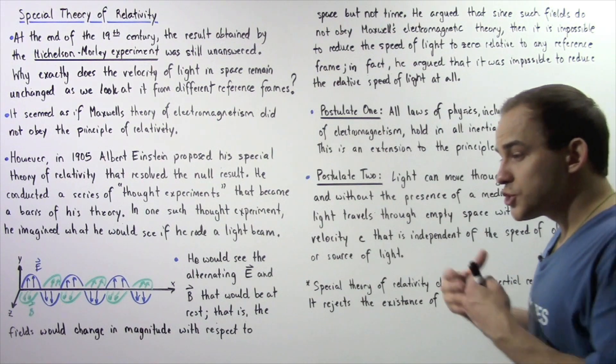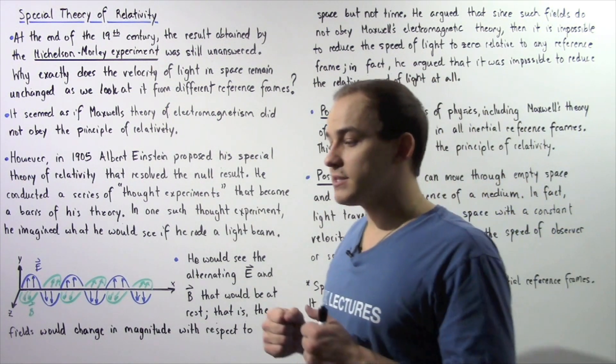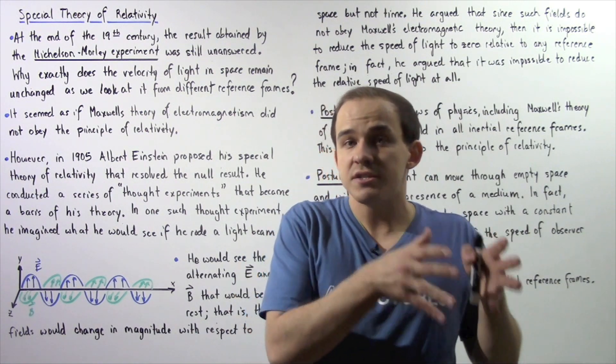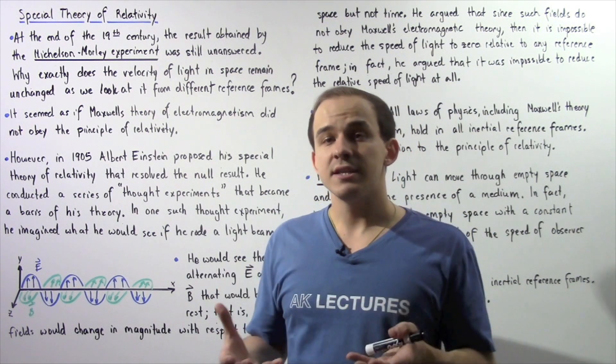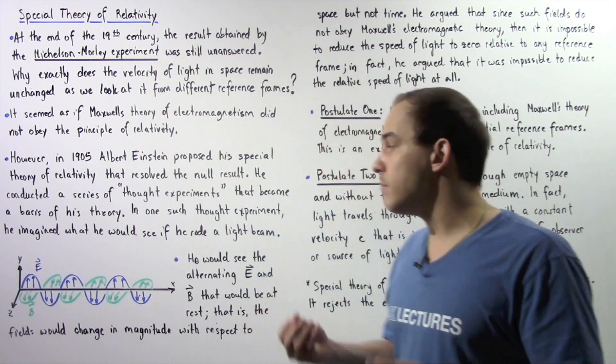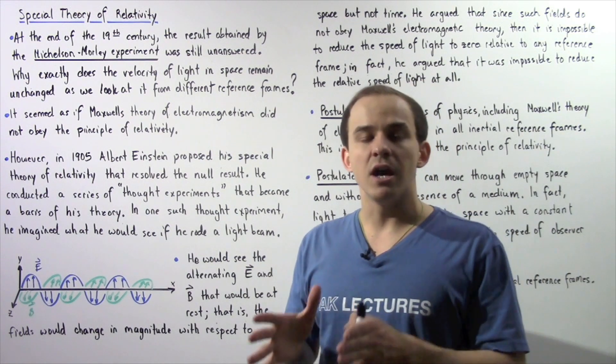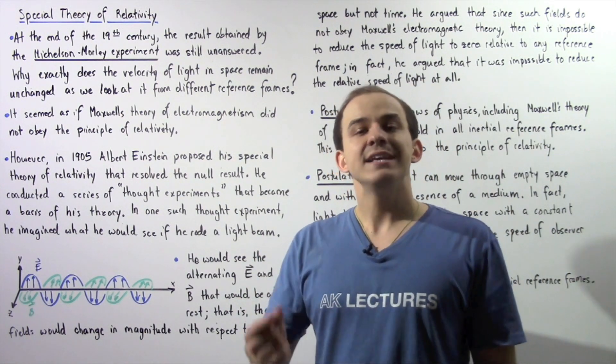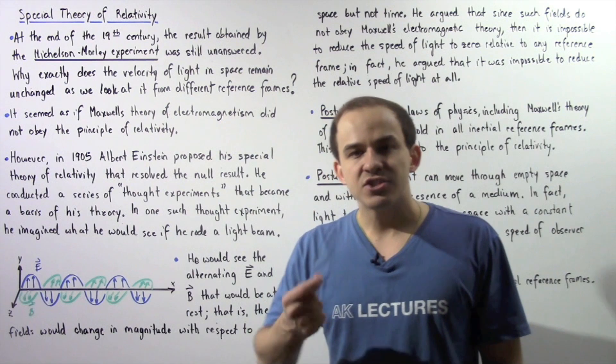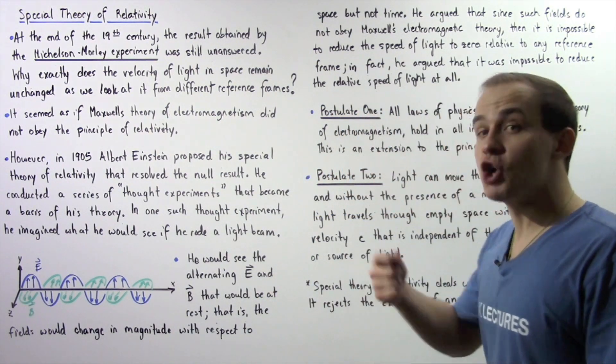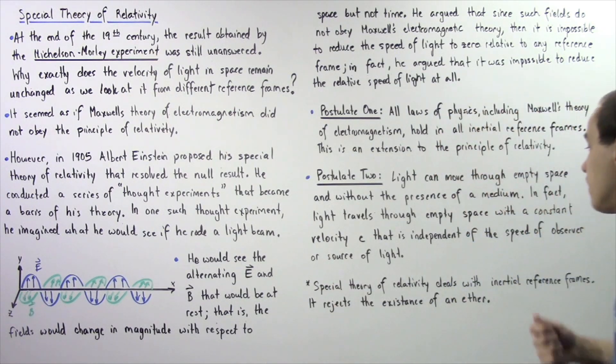So the ether that was spoken about in the previous lecture does not actually exist. Our space between the sun and the earth consists of empty space. There is an absence of molecules. And light can propagate in the absence of molecules. And the speed of light is always the same: 3 times 10 to the 8 meters per second within a vacuum, regardless of the speed of the observer or the speed of the source that's creating the light.